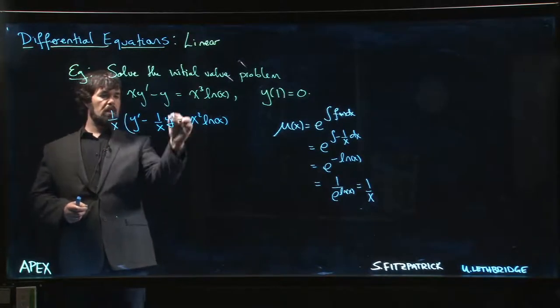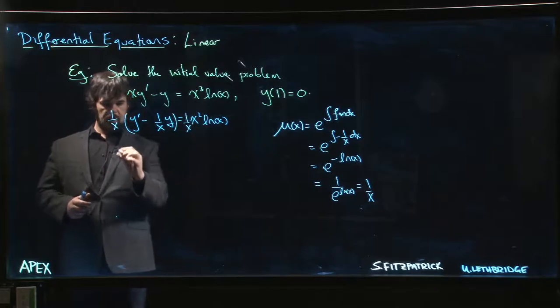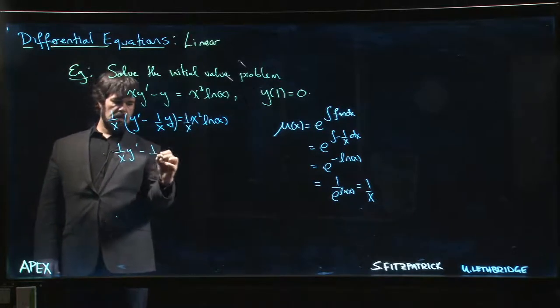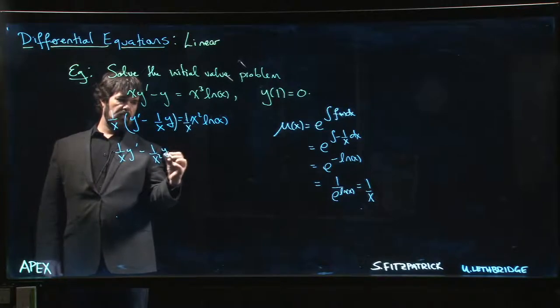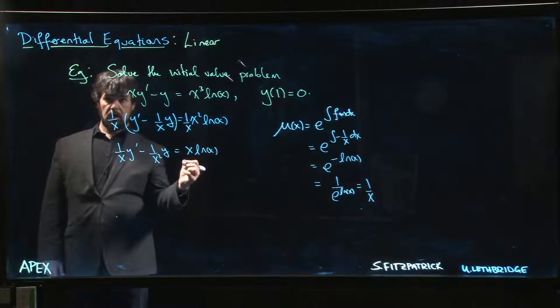Multiply both sides by 1/x and what do we get? We get (1/x)y' - (1/x²)y = x log x.